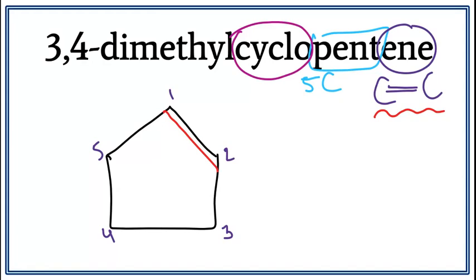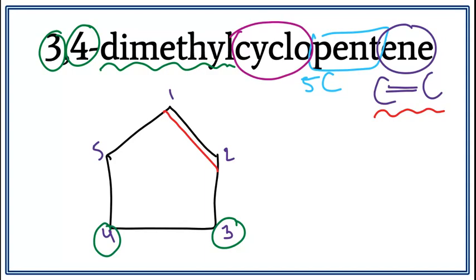We have the cyclopentene drawn in. Now we need to attach the dimethyl. Dimethyl means that there are two methyls attached to the cyclopentene — one on the third carbon and one methyl on the fourth carbon. Let's get rid of these numbers and draw the methyls on the third and the fourth carbon. This is the structure for 3,4-dimethylcyclopentene, or 3,4-dimethylcyclopent-1-ene.